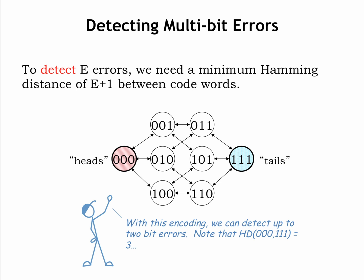In other words, assuming we start with either 0,0,0 or 1,1,1, we can detect the occurrence of up to 2 errors. Basically, our error detection scheme relies on choosing codewords far enough apart, as measured by Hamming distance, so that e errors can't corrupt one valid codeword so that it looks like another valid codeword.